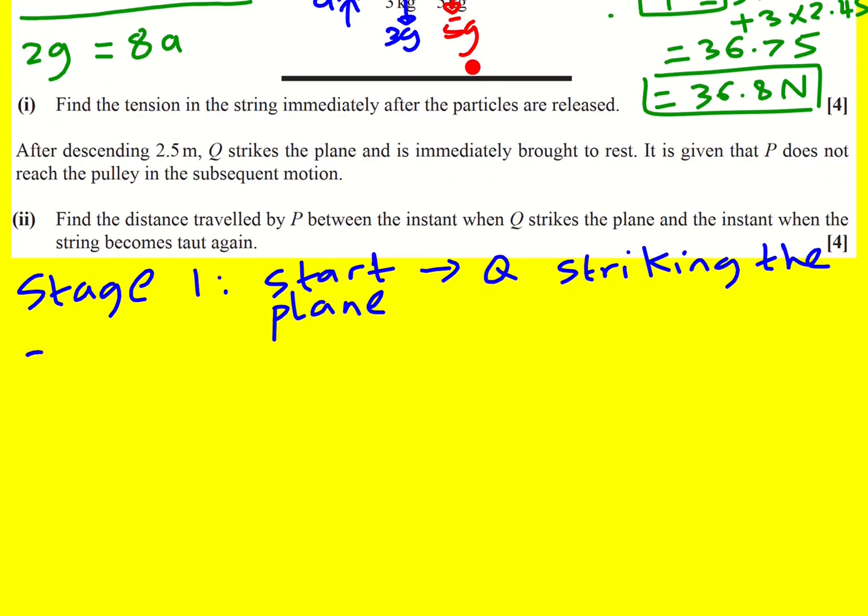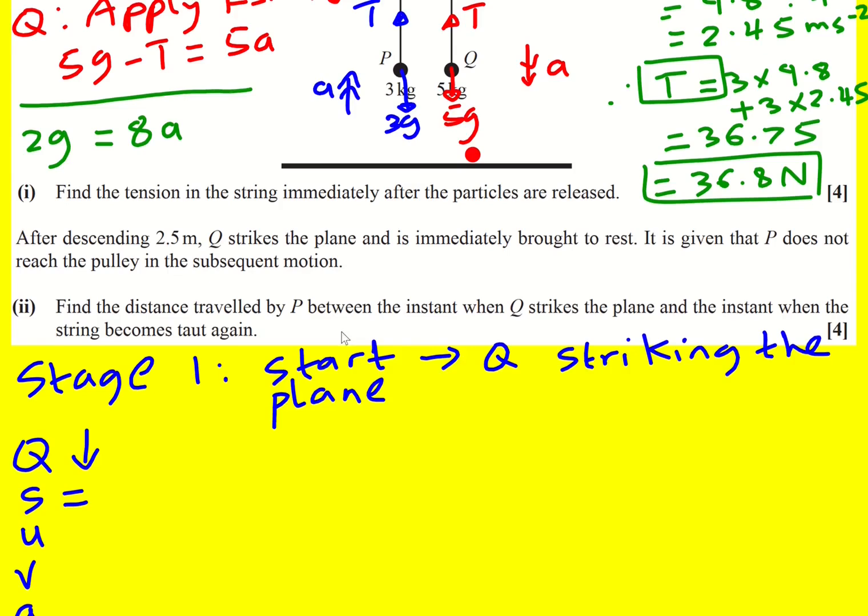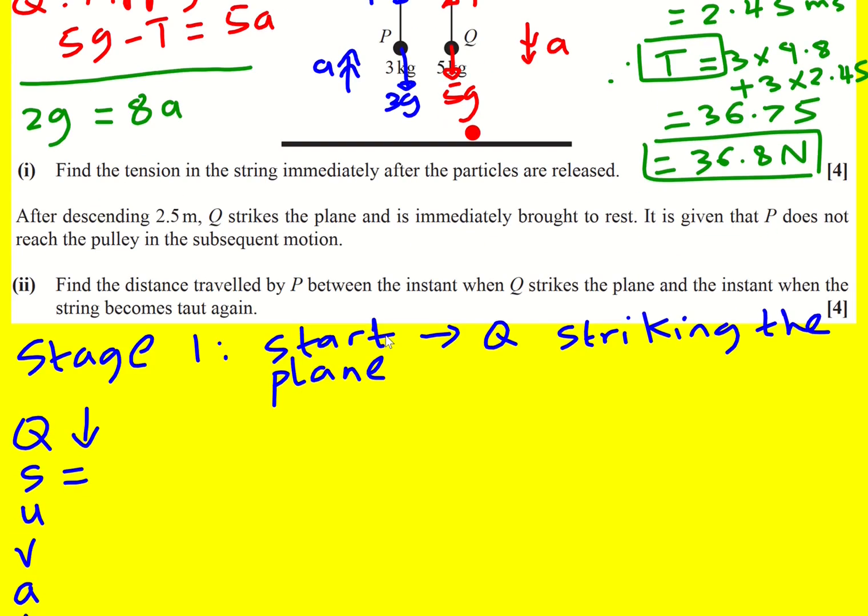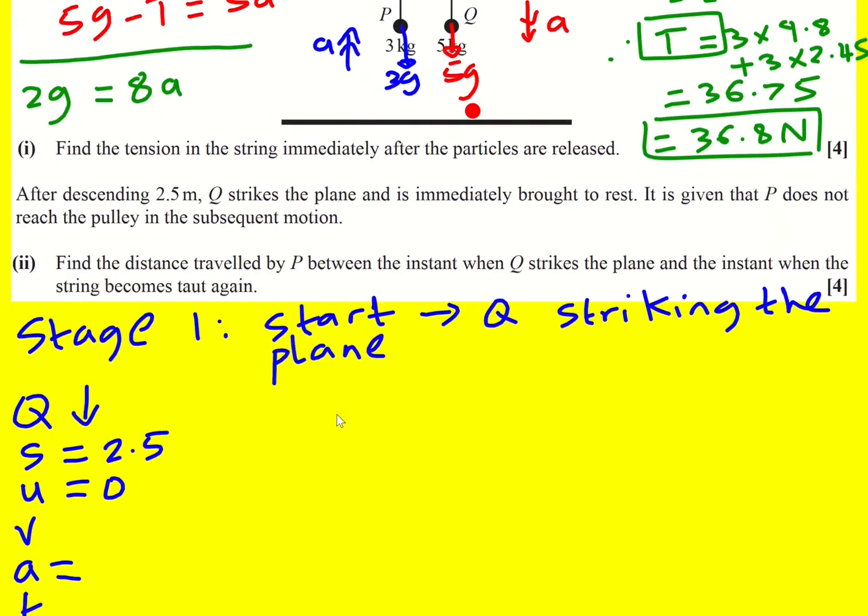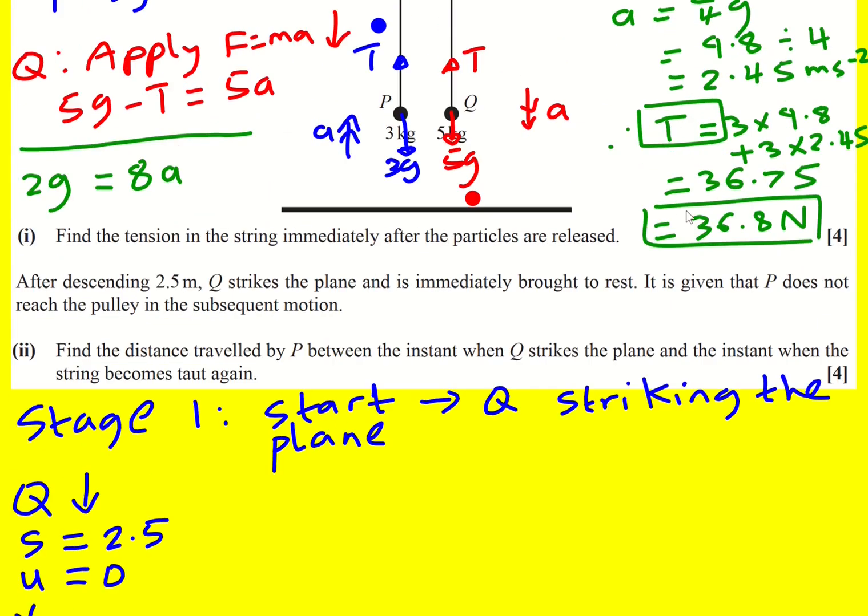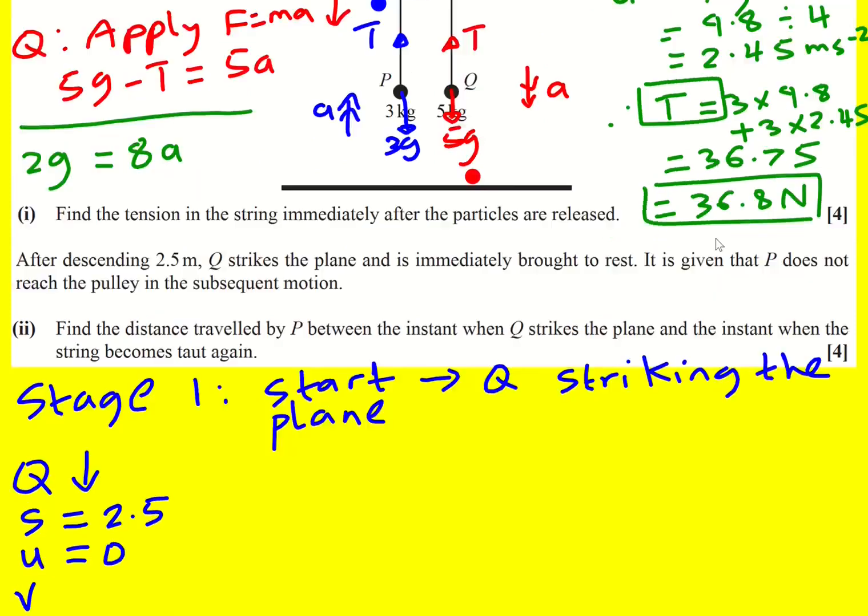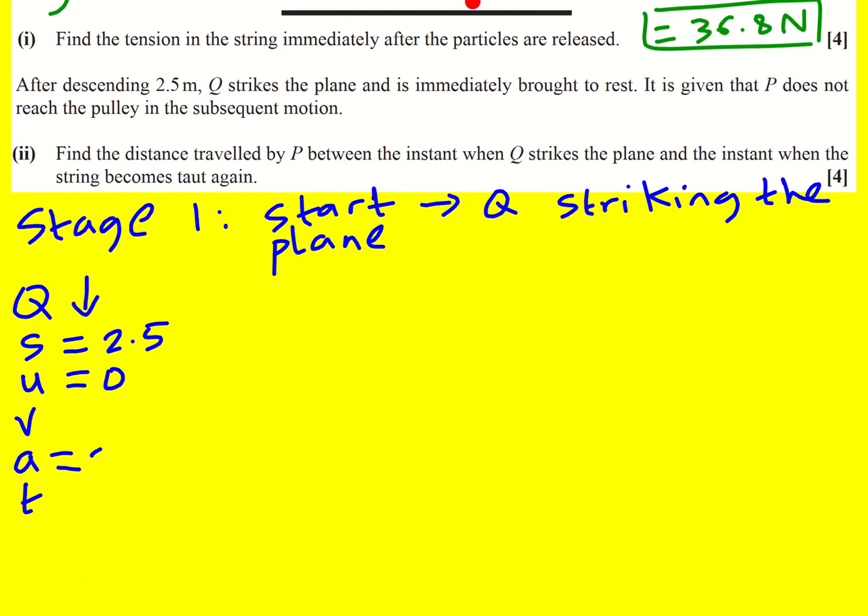So it's going to be the start to Q striking the plane. And I'm going to look at Q and I'm going to apply Suvat in the downwards direction. So it's traveled 2.5 meters. It started off zero and then the acceleration, it's not under freefall, so it's not gravity. It's actually this 2.45 from the first part of the question.